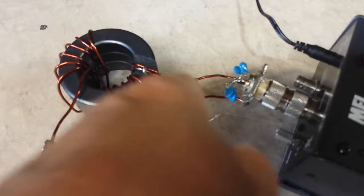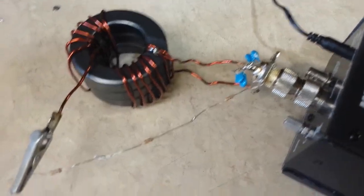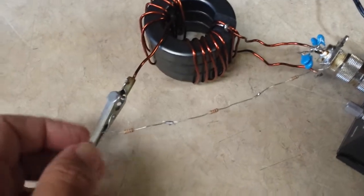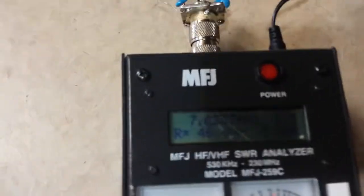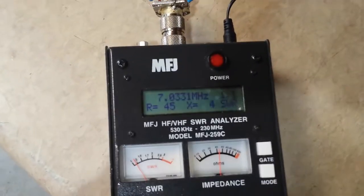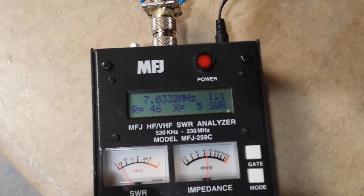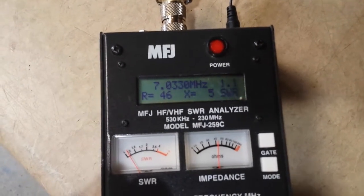And then of course the beginning of the first turn is your ground. I've got a 3K dummy load connected to the secondary, and we have 7032 here, 40 meters, and our SWR is 1.1. Very good.